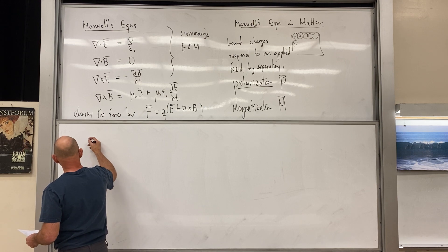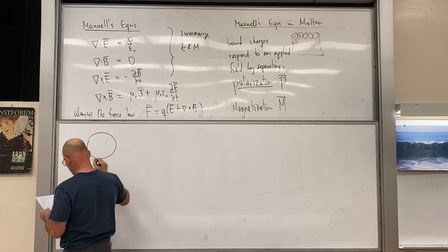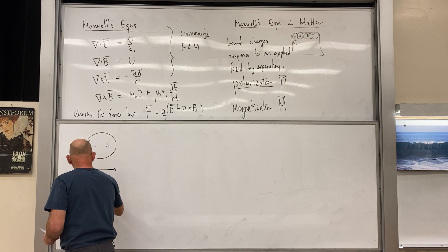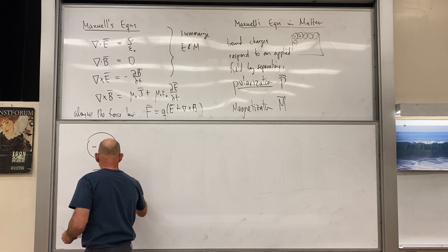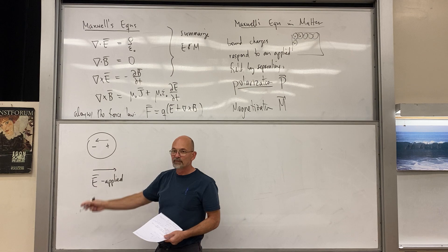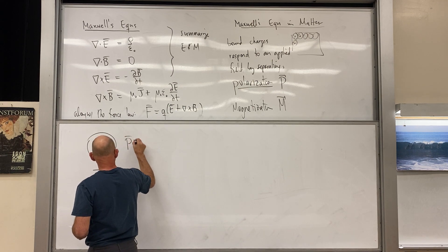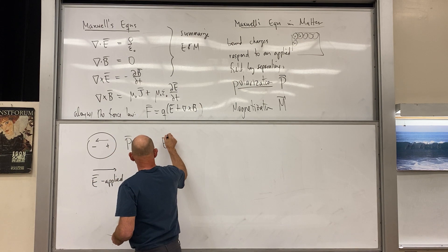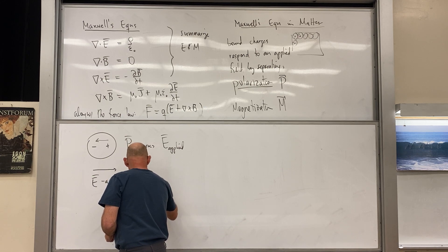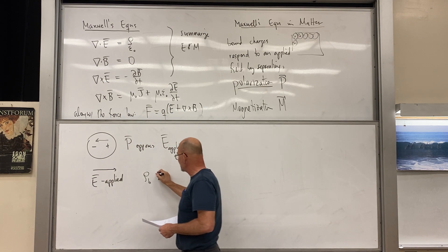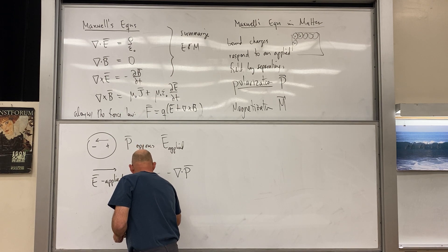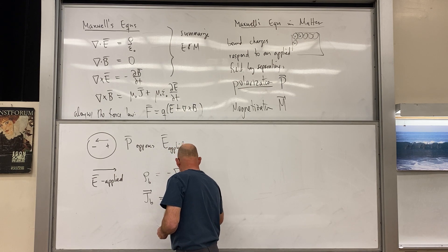Suppose we have a polarized atom where charges are separated. The applied E field produces the polarization, and the polarization opposes the applied field. From this we get two key equations: the bound charge density is minus the divergence of P, and the bound current density is the curl of M.